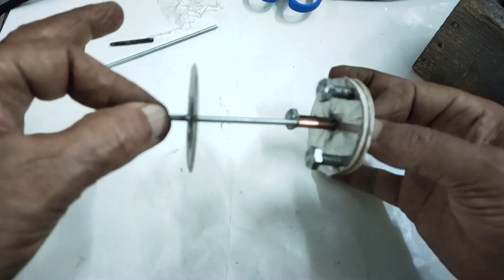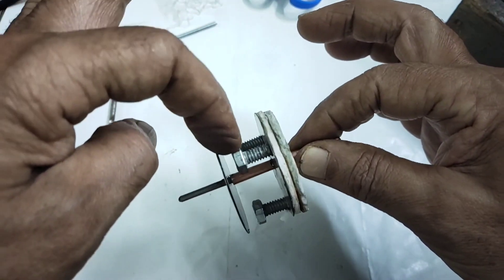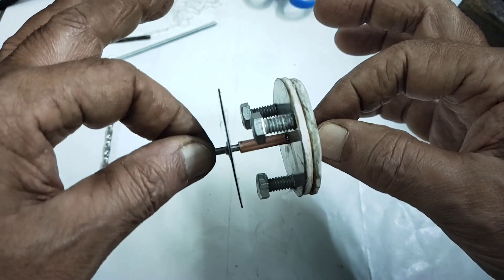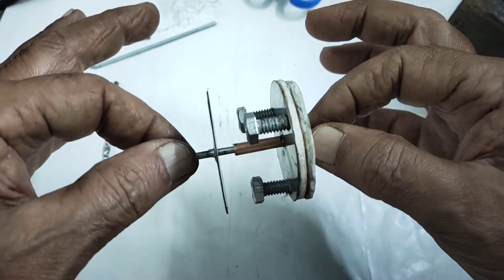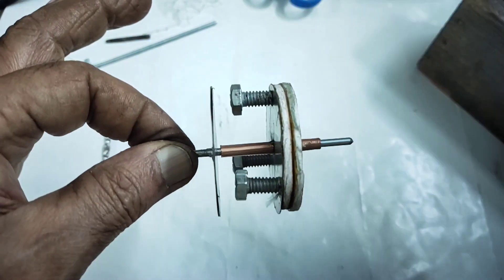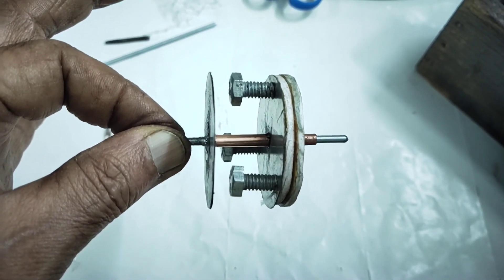See that this distance should be there so that magnet will come here. Otherwise you have to put some washers and make it run smooth. This is the engineering aspect. Okay friends, next we will see how to wind and make the final motor, the axial motor.